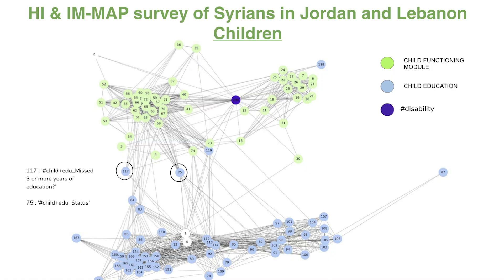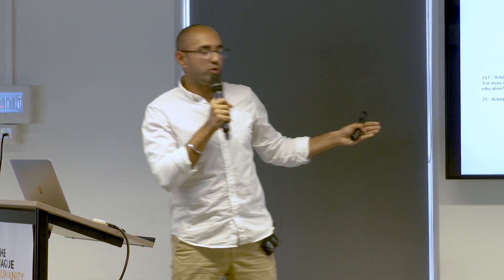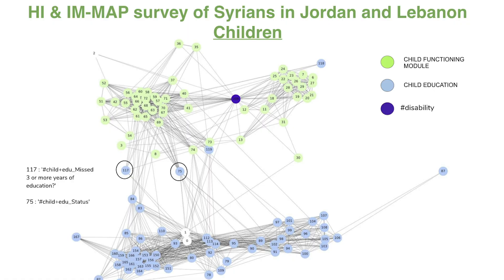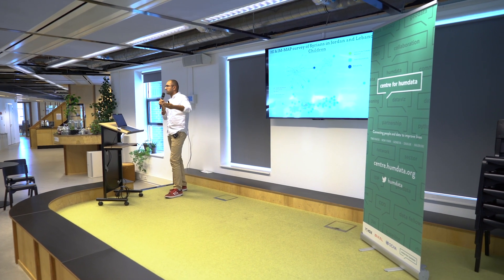When you look at the part of the dataset that targeted minors, there are two categories of questions: one on child functioning — the equivalent of the Washington Group for children — and questions on education. There is a very interesting correlation structure within each category. I'd like to focus on certain education questions that act as bridges of information between the two categories. These questions are, for example, how many years of education did the child miss, and what is the current education status of the child. By looking at correlations in this way, we can start thinking about the perhaps causal relationships between child functioning and education.